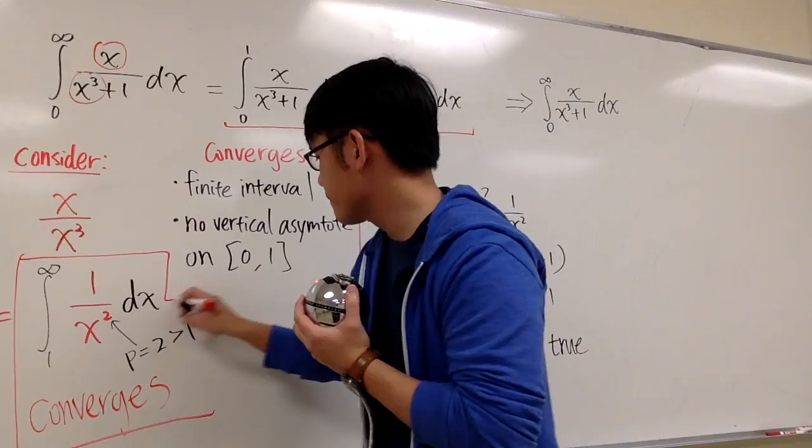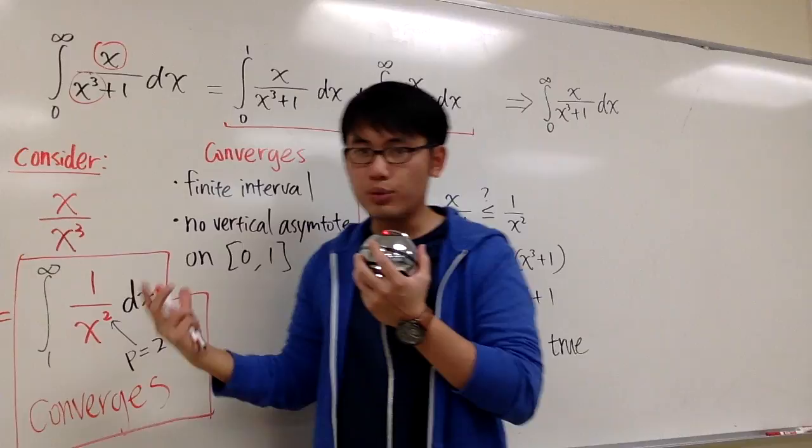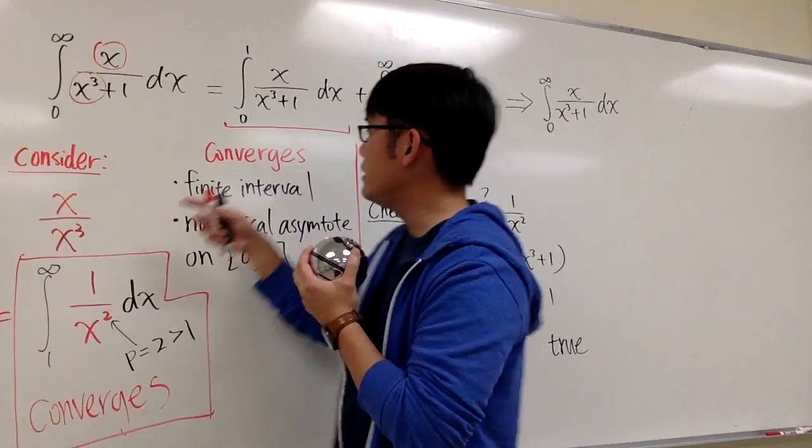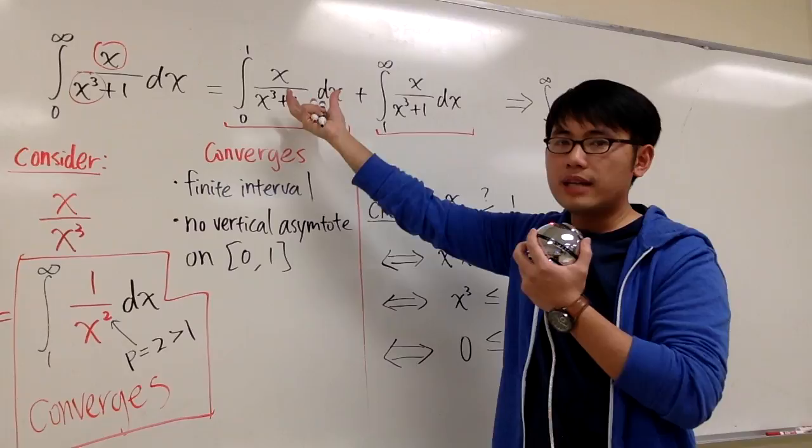Originally I started with 0 to infinity, but the tool I have is from 1 to infinity. In order to make a comparison, I have to break the original integral into two pieces: the first piece goes from 0 to 1, and the second piece goes from 1 to infinity. Then I'll check if each piece converges.